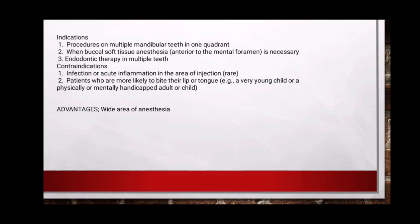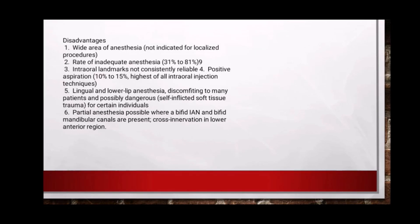The contraindications include infection or acute inflammation in the area of injection, and patients who are likely to bite their lip or tongue. The advantage is a wide area of anesthesia. Disadvantages include: wide area of anesthesia not indicated for local procedures, rate of inadequate anesthesia, intraoral landmarks not consistently reliable, positive aspiration risk, lingual and lower lip anesthesia, discomfort to many patients and possibly dangerous for certain individuals, partial anesthesia possible where a bifid inferior alveolar nerve and bifid mandibular canal are present, and cross innervation in the lower anterior region.